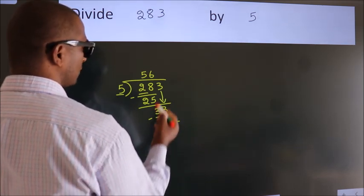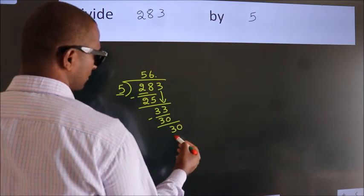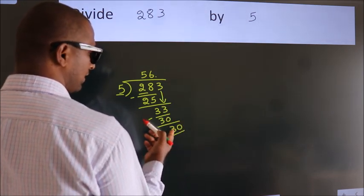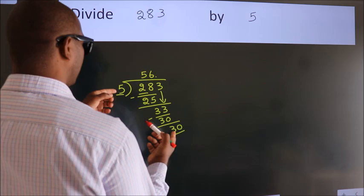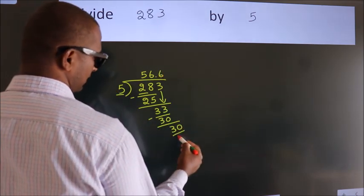So, what we do is, we put dot take 0. So, 30. When do we get 30? In 5 table. 5 6 30.